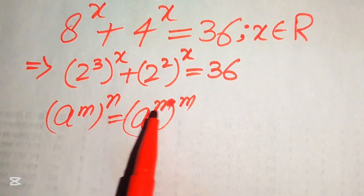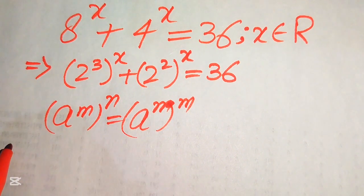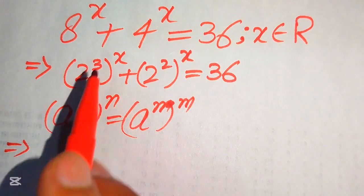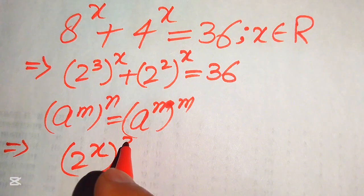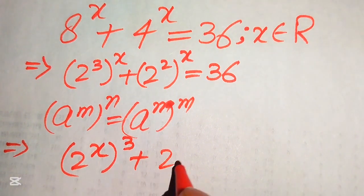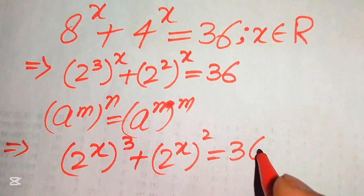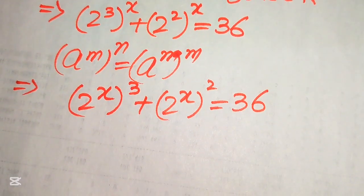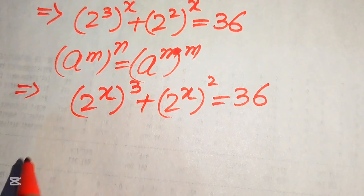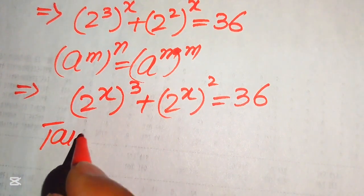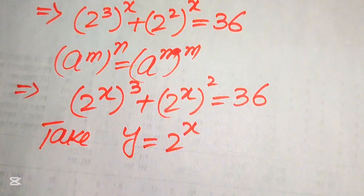This means we can interchange the two exponents without changing the final answer. So we exchange the exponents and rewrite as (2^x)³ plus (2^x)² equals 36. Our goal is to convert this exponential equation into cubic form, so we let y equal 2 to the power of x.